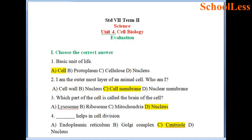Question 2: I am the outermost layer of an animal cell. Whom am I? We have seen in the class that animal cell doesn't have a cell wall. Therefore, cell membrane is the outermost layer of an animal cell. C is the right answer.